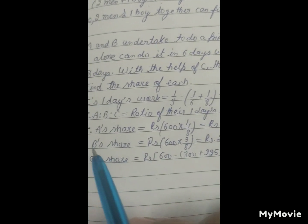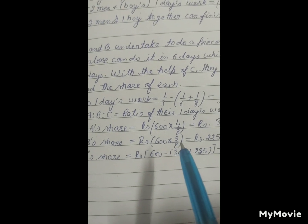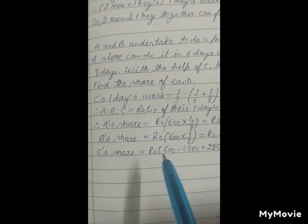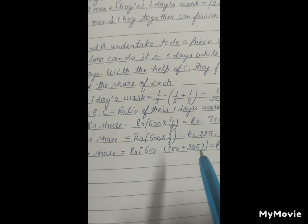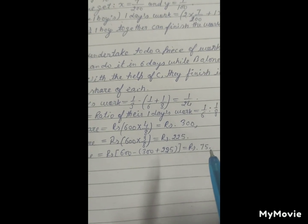equal to Rs. 300. B's share is Rs. 600 into 3 upon 8, Rs. 225. So C's share is equal to Rs. 600 minus 300 plus 225 equals to Rs. 75.